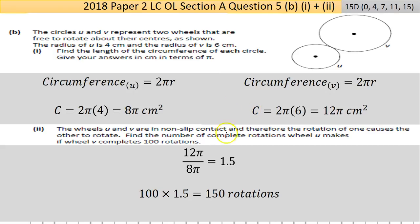Now Part 2 is a little trickier. Let's read through it. The wheels u and v are in non-slip contact—there's no friction—and therefore the rotation of one causes the other to rotate. Find the number of complete rotations wheel u makes if wheel v completes 100 rotations. Some will find this really easy and they'll realize that if v rotates once, it's going to move u more than once. u will turn faster.